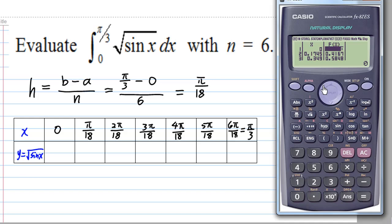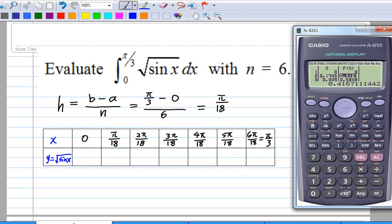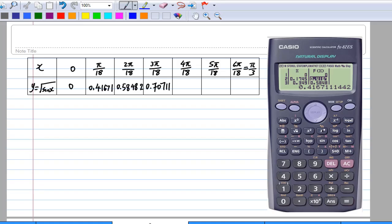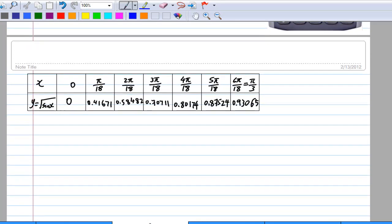When x equals 0, y equals 0. When x equals π over 18, y is 0.41671. I can fill up this value. These are the first four values of y, and then I'll continue with the next values of y.